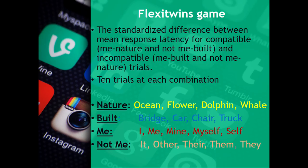For example, some nature words were: ocean, flower, dolphin, whale. Built words were: bridge, car, chair, and truck. Me words were: I, me, mine, myself, and self. Not-me words were: it, other, there, them, and they.